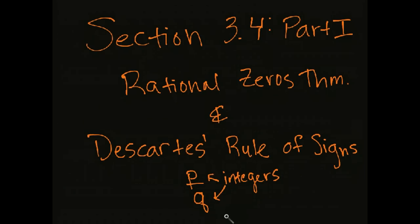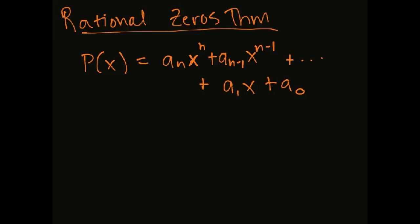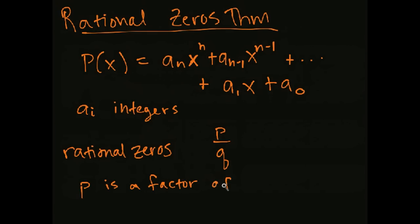We're going to find possible rational zeros with the Rational Zeros Theorem. If we have a generic polynomial, that's a_n x^n and so forth down to a_0, if all of these have integer coefficients, then we can describe all rational zeros. All rational zeros are going to be of the form p over q, where p is a factor of the constant coefficient a_0, and q is a factor of the leading coefficient a_n.